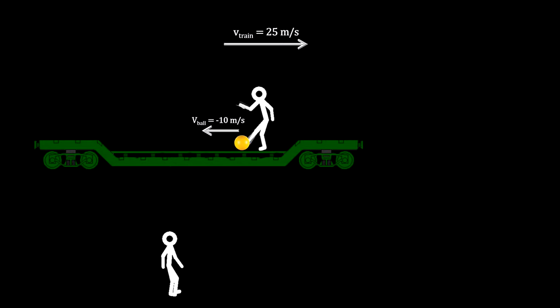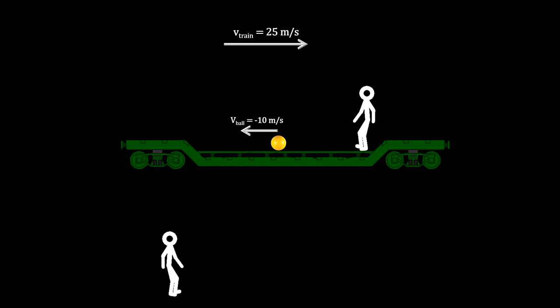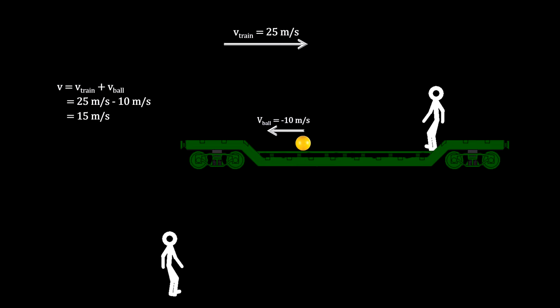Now, if the person kicks the ball in the opposite direction, the person on the ground would subtract the speed of the ball from the speed of the train. He would see it moving at 0.15 meters per second.